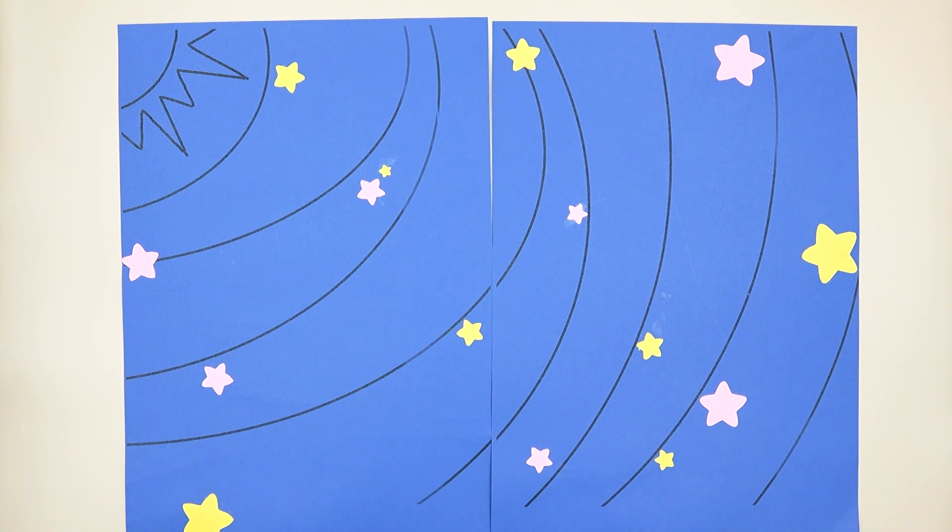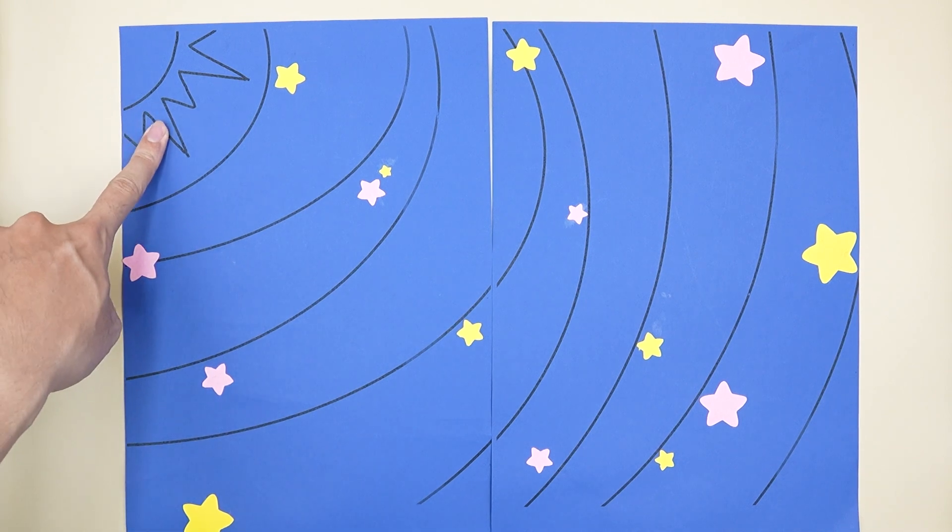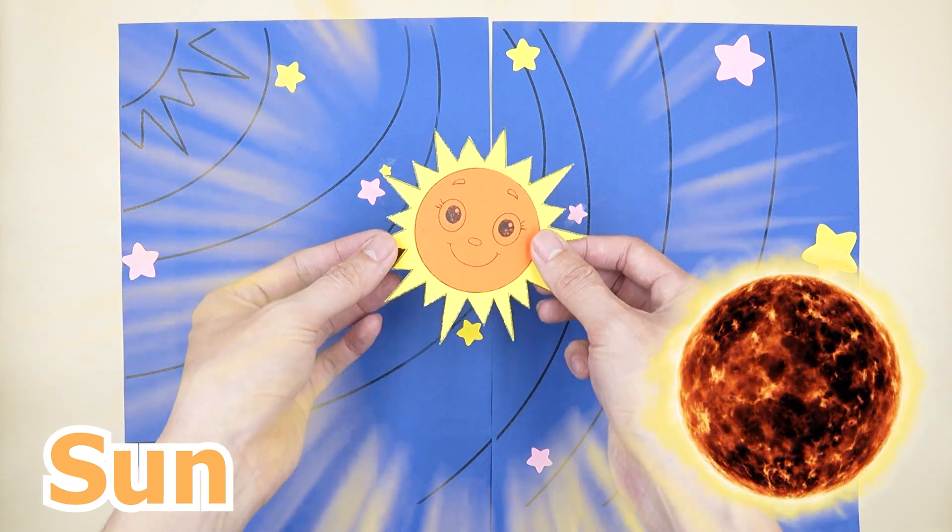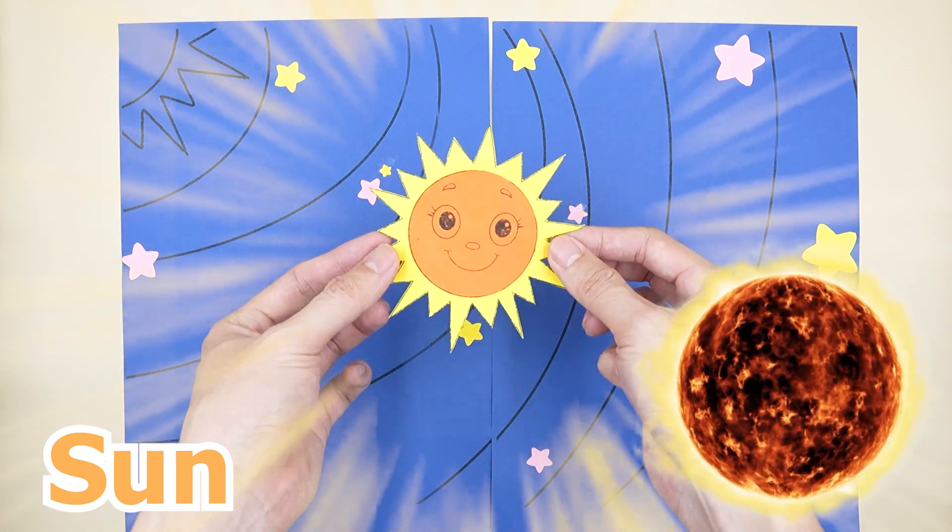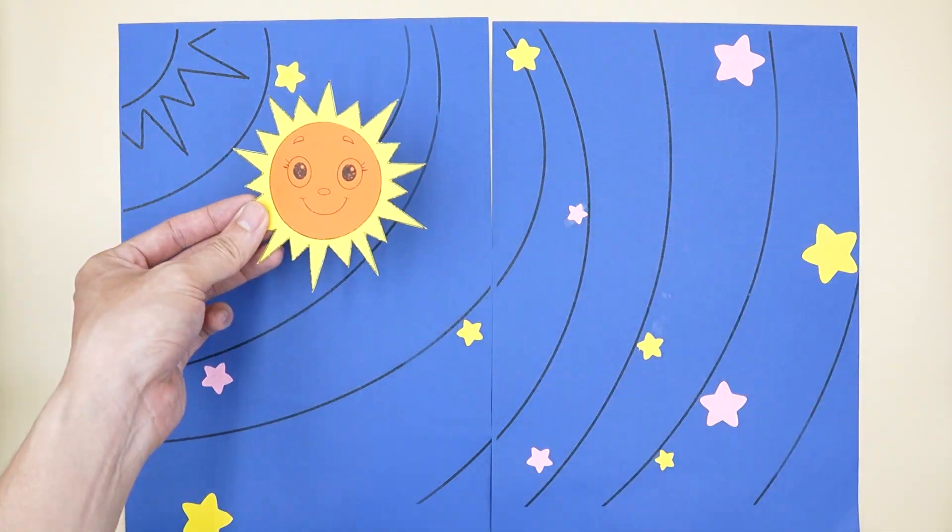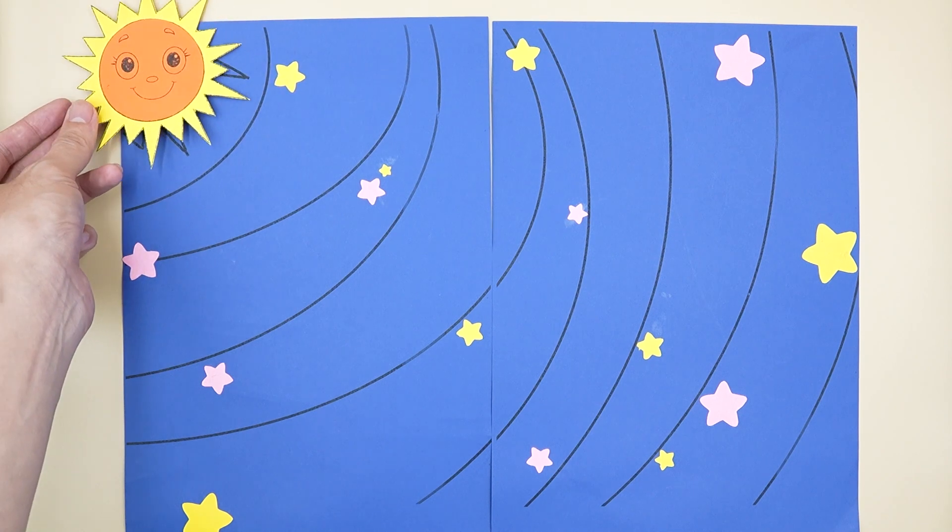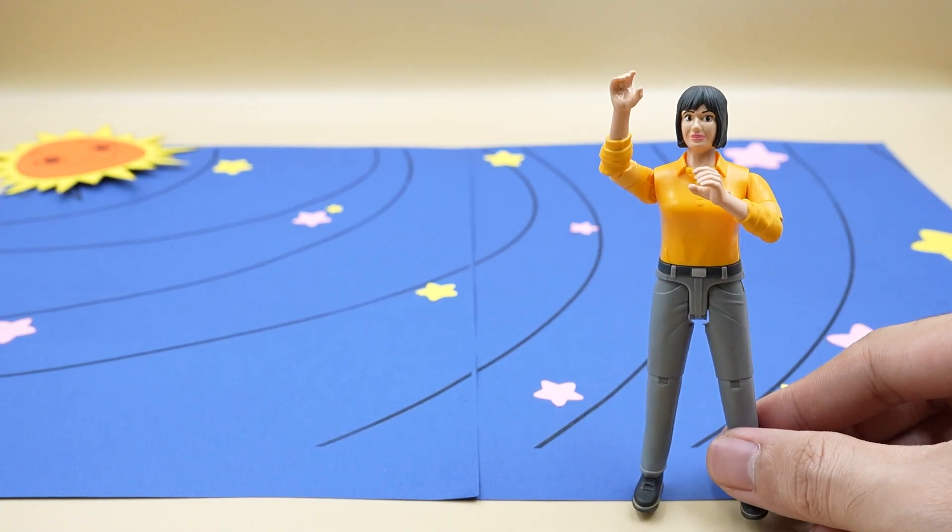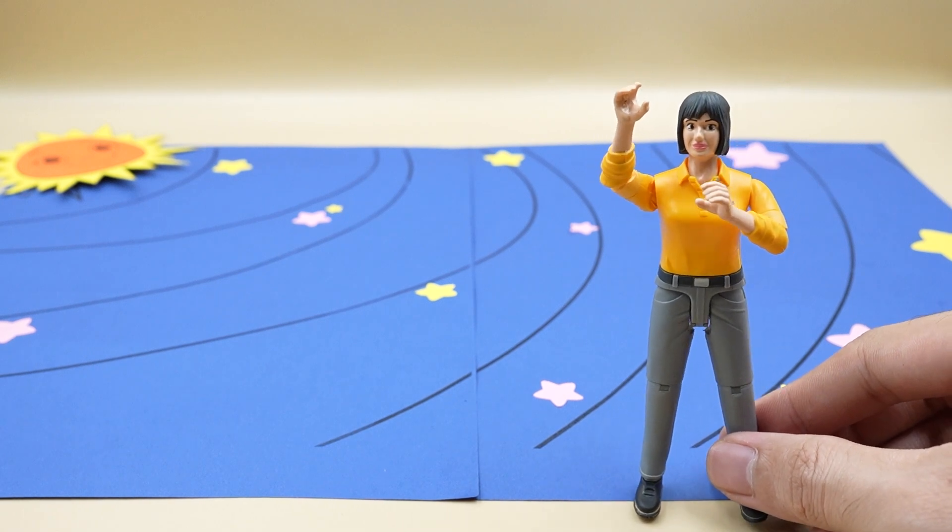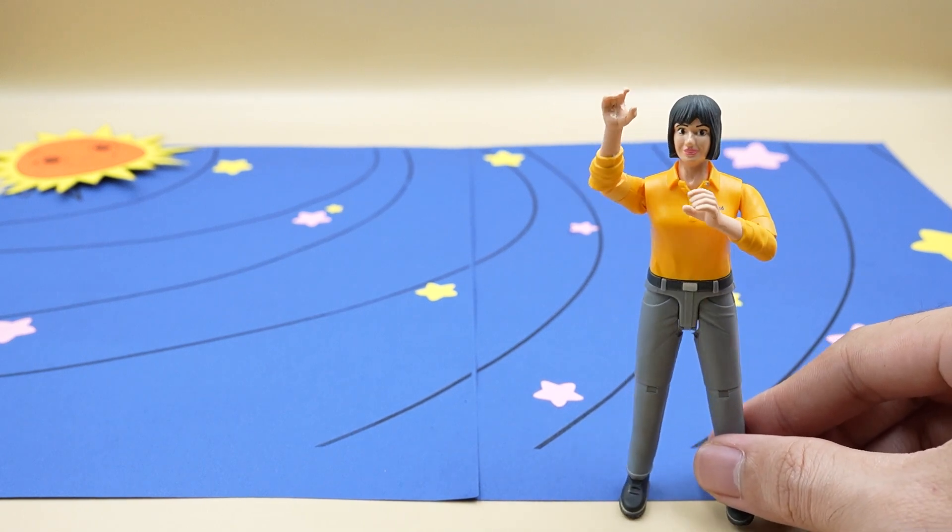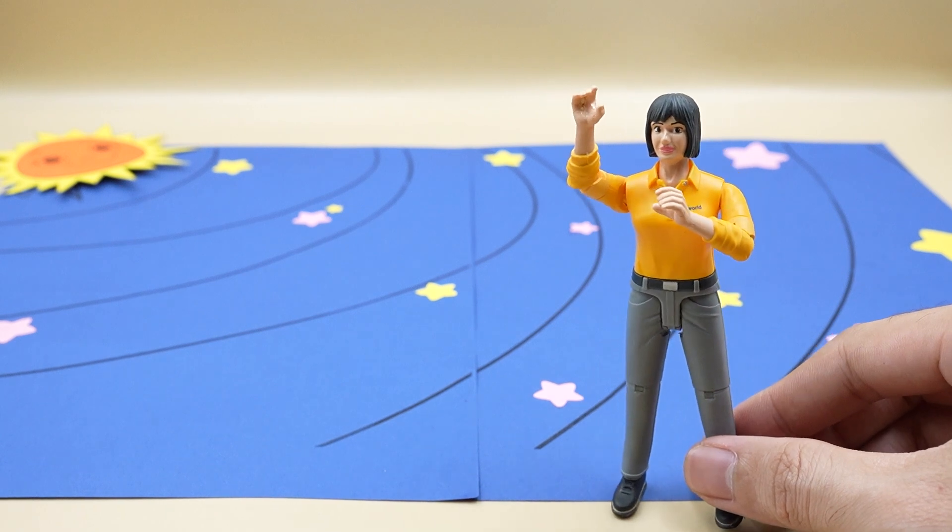This is a picture of the solar system and the place I'm pointing at is the position of the sun. The sun is the biggest star in the solar system so I will put it first. Hello everyone! I'm Anna. Today I will guide you to arrange the stars in the solar system on this picture. Follow me!